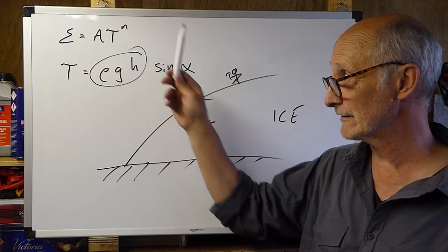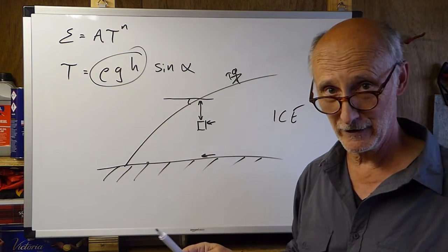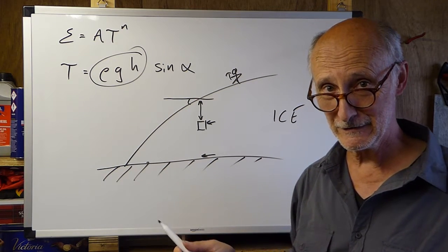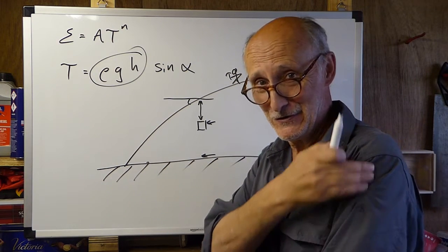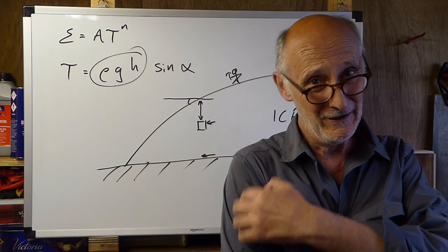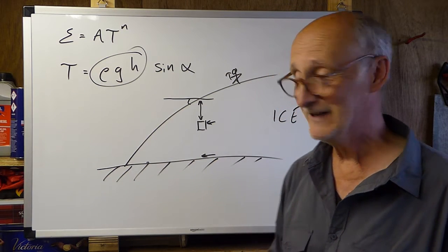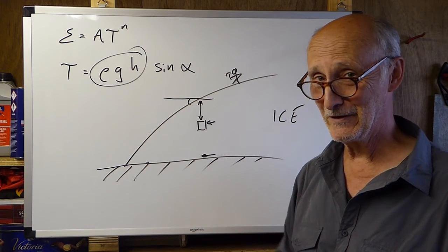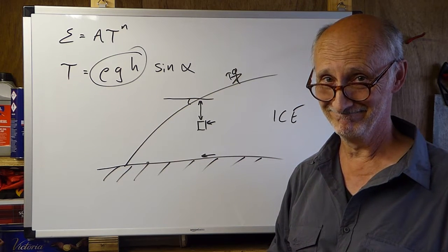But for now, I just want you to be aware of these two equations, Glenn's flow law, the shear stress equation. If you're a proper glaciologist, then I expect you should have one of them tattooed on one arm and one of them tattooed on the other arm, so you can never forget them. And we'll come back and we will revisit these later on.